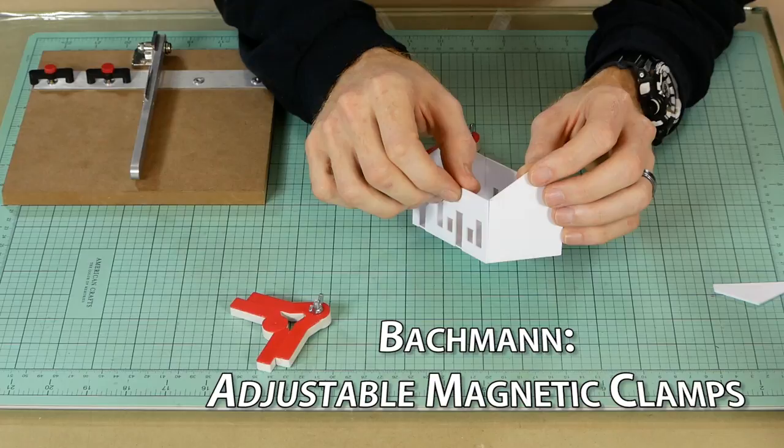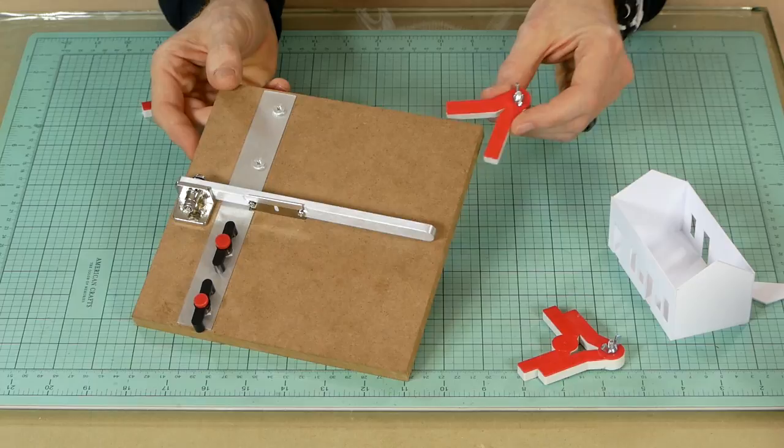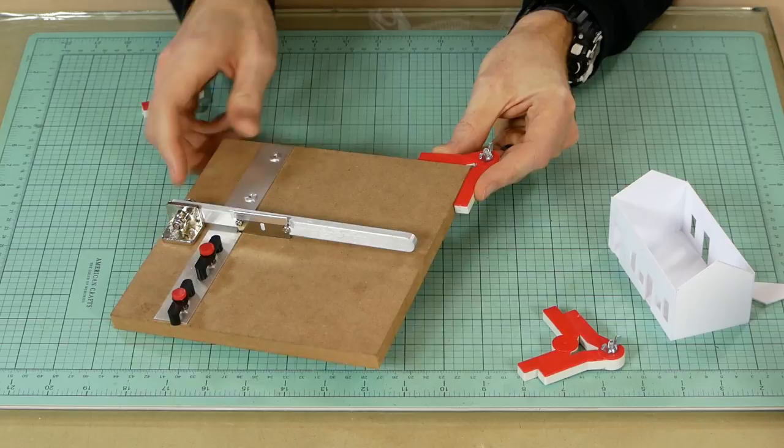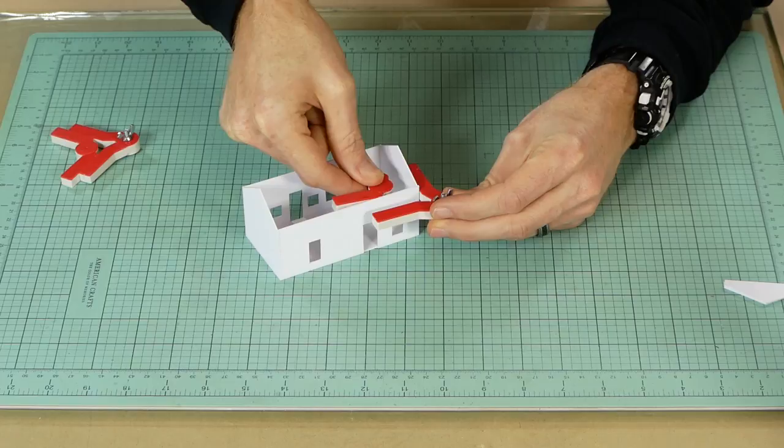To glue the sides and get a perfect join I'm using some Bachmann adjustable magnetic clamps. These walls are at a 90 degree angle so I press the clamp up against something that's perfectly 90 degrees and then tighten the bolt and now it's ready to use.